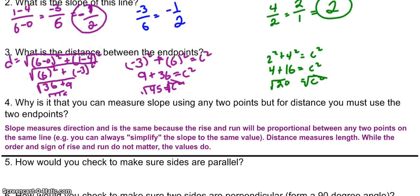Now, here are the answers. Here's what I've written. Slope measures direction and is always the same because the rise and the run will be proportional between any 2 points on the same line. What I mean by that is you can always simplify the slope to the same value.